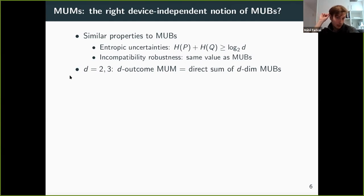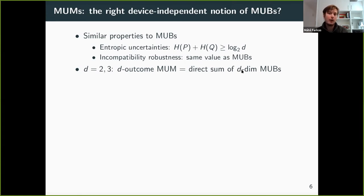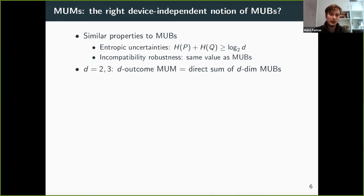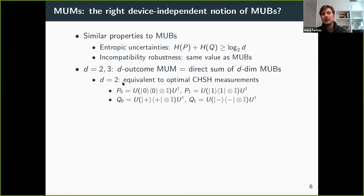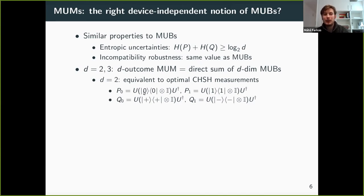Moreover, for outcome numbers two and three, we can show that whenever we have a D-outcome pair of MUMs, they can always be written in some basis as a direct sum of D-dimensional MUBs. Your Hilbert space is a direct sum of D-dimensional subspaces, and on each subspace the measurements act as rank-one projectors onto a pair of MUBs. In the D=2 case, the MUM construction is completely equivalent to what you can certify in the CHSH scenario: every pair of MUMs can be written as a tensor product of a MUB pair with identity — equivalently, N copies of a pair of MUBs if the space has N dimensions.